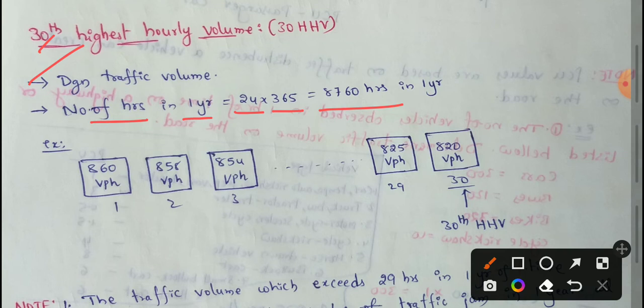Remaining all, we have 8,760 minus 29. Remaining all hours, in any hours, we have 8,760 hours in one year.